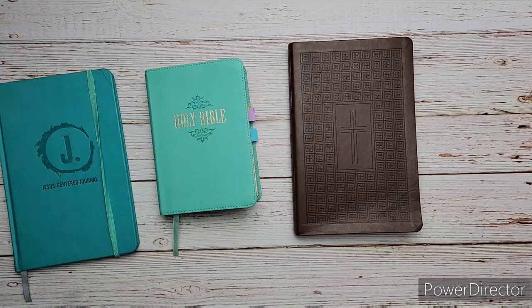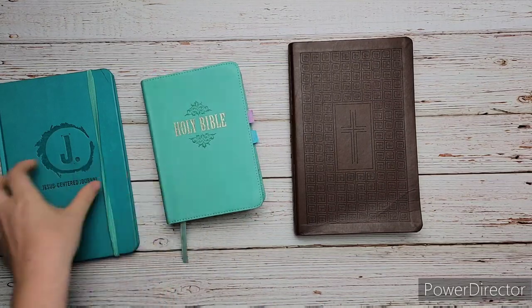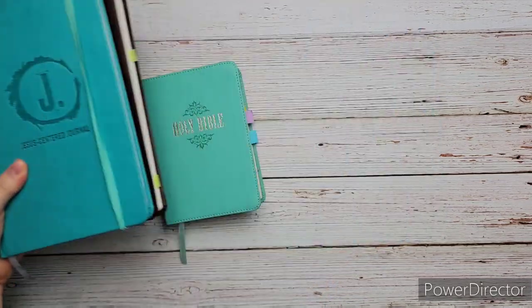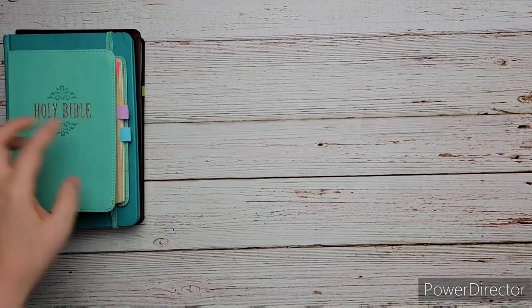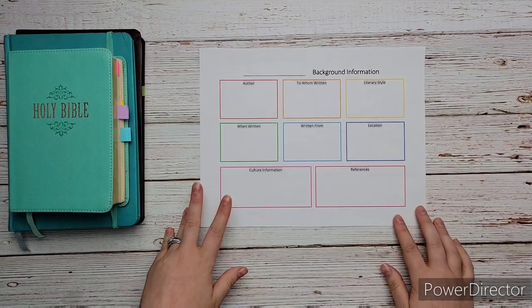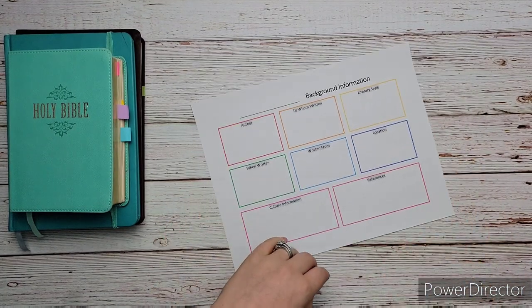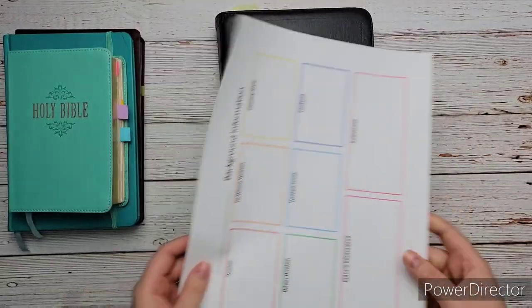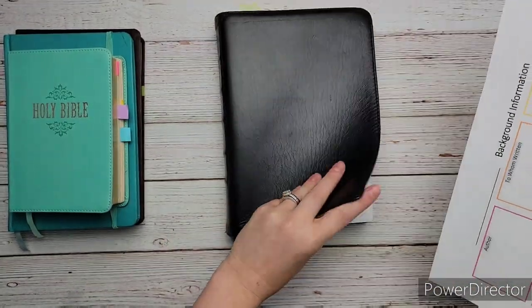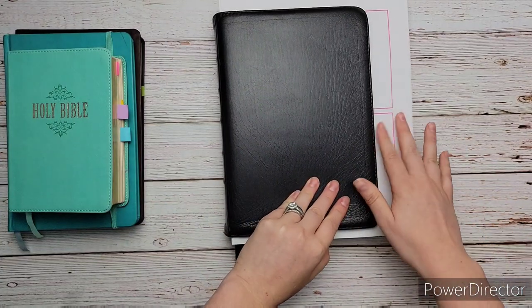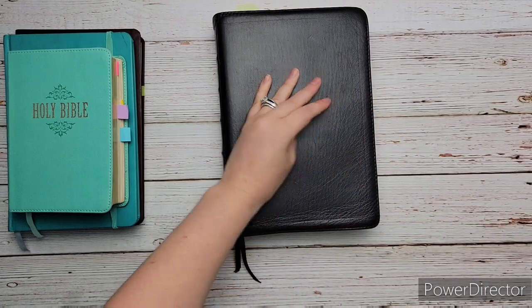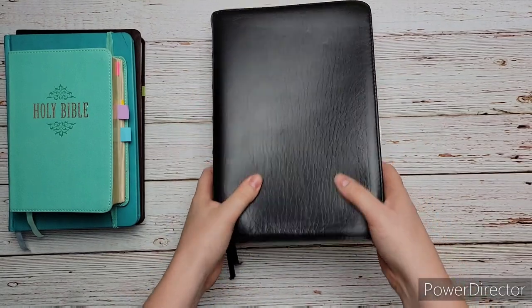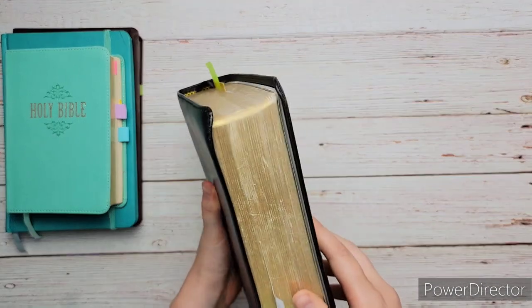If you've watched my newer verse mapping videos you know that I have recently came out with a new verse mapping template and one of those templates is the background information template. I love this template and I definitely plan on using these and creating one for all 66 books of the Bible but for this series I really wanted to do everything and put all my notes and everything possible into this journaling Bible. I haven't used it in a really long time and I just want to see how that will go.